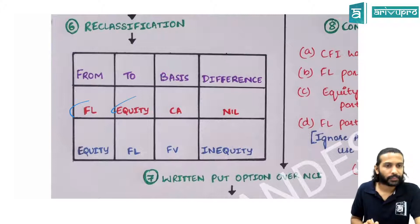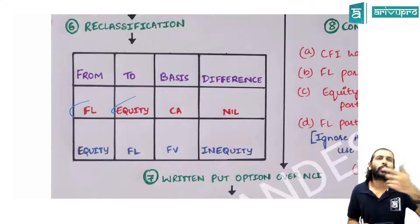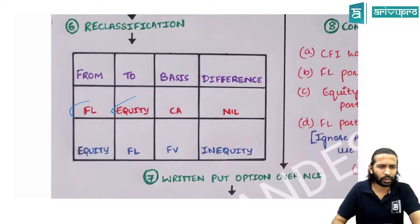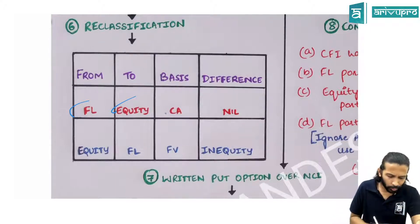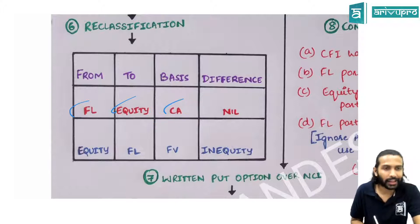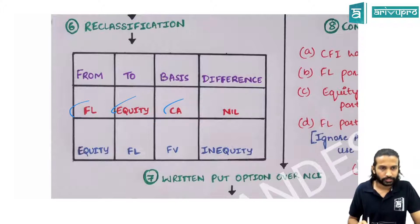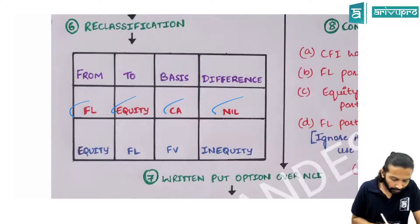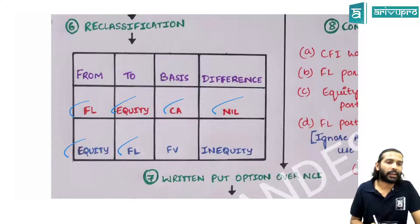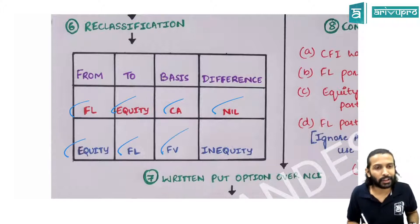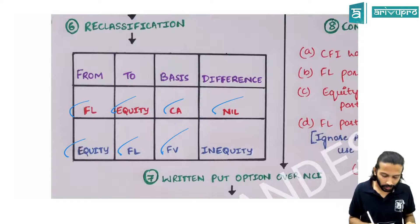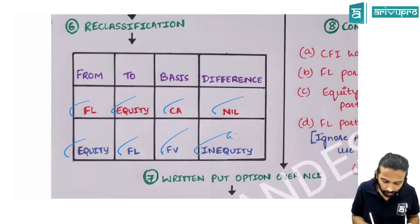Reclassification between financial liability and equity is possible. When going from financial liability to equity, the transfer is done at carrying amount since equity has no fair value — so there is no gain or loss. When going from equity to financial liability, fair value is used, and the resulting gain or loss goes into equity.